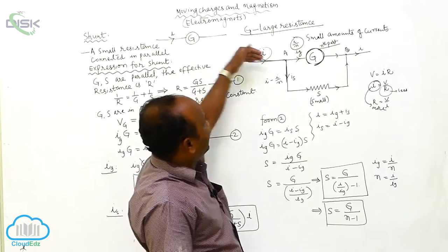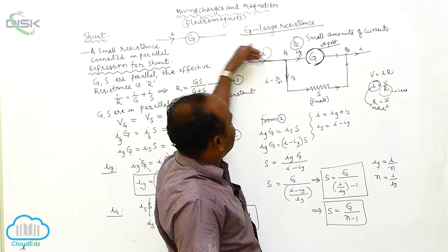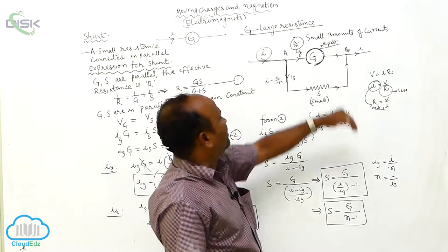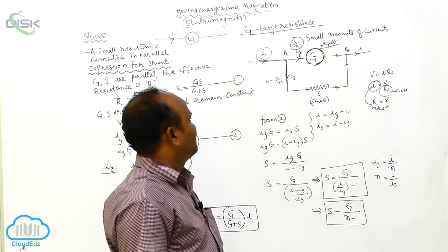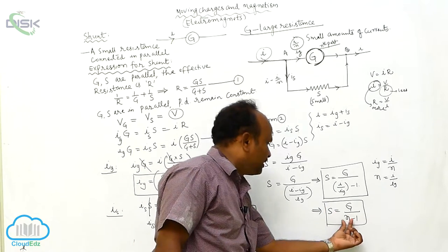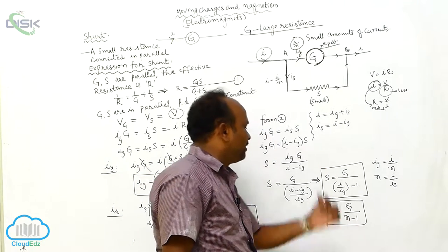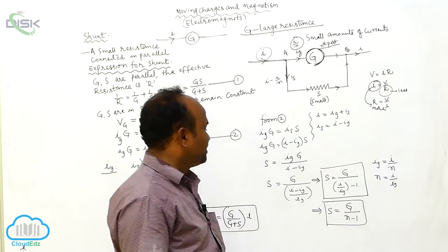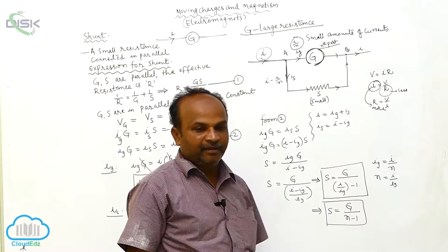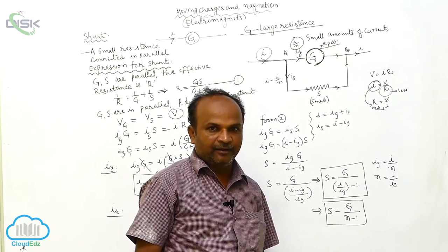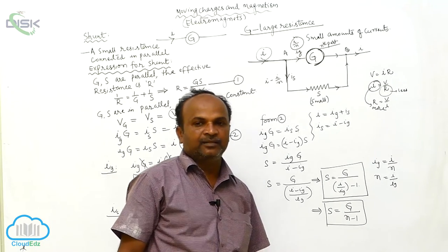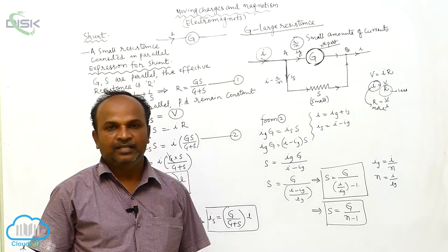If the nth part of the total current is passing through the galvanometer, that nth part is N. Therefore, S is equal to G by (N minus 1). This is the expression for the shunt. See you next time. Thank you.